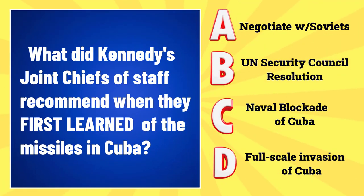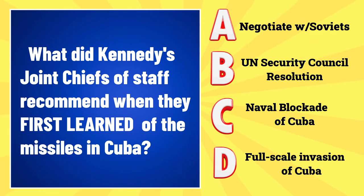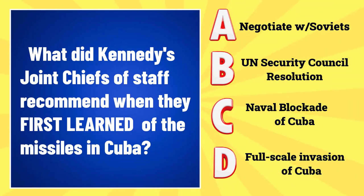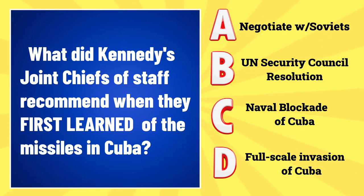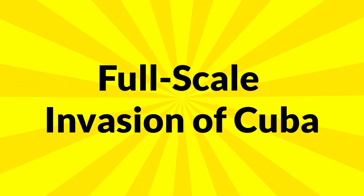What did Kennedy's Joint Chiefs of Staff recommend when they first learned of the missiles in Cuba? A, negotiate with the Soviets. B, a UN Security Council resolution. C, a naval blockade of Cuba. Or D, a full-scale invasion of Cuba? The answer is a full-scale invasion of Cuba.